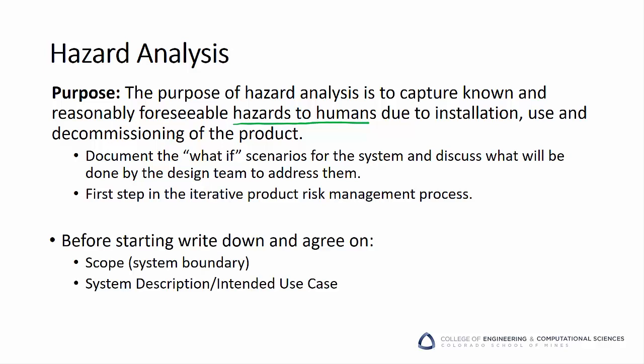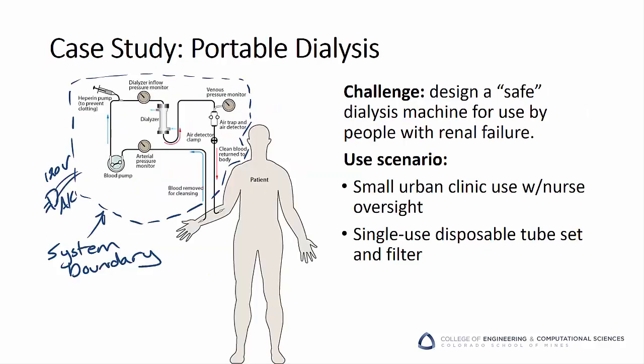Now that we've decided to complete a hazard analysis, we need to do a couple of things before beginning in earnest. We need to make sure everyone is on the same page with the system boundary and scope, and we need to capture the system description and the intended use case. Let's pretend our project is to design a small portable dialysis machine for use by individuals with renal failure. Dialysis is a process of removing waste and excess water from the blood, and is used primarily as an artificial replacement for lost kidney function.